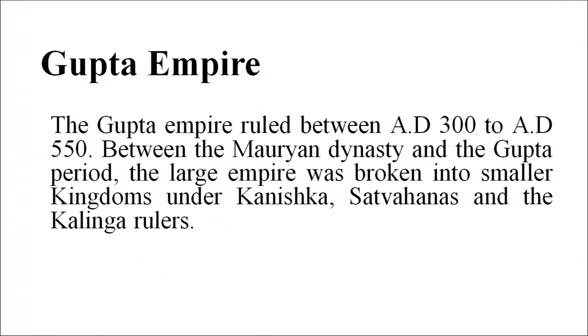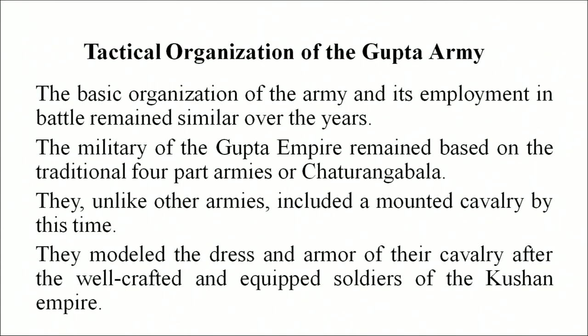The Gupta empire ruled between AD 300 to AD 550. Between the Mauryan dynasty and the Gupta period, the large empire was broken into smaller kingdoms under Kanishka, the Satavahanas, and the Kalinga rulers. The military of the Gupta empire remained based on the traditional four-part army of Chaturangabala. Unlike other armies, they included a mounted cavalry by this time, and modeled the dress and armor of their cavalry after the well-crafted and equipped soldiers of the Roman empire.